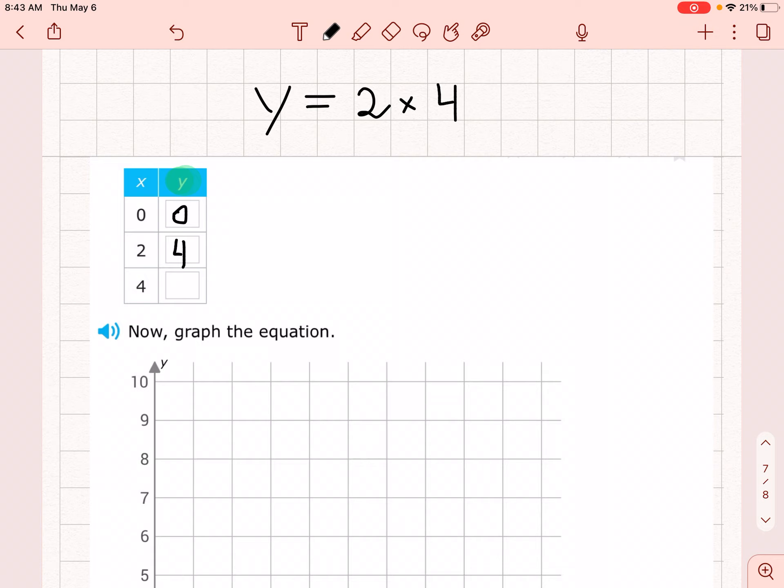Remember, when I have a letter and number next to each other, it means multiply. So it means 2 times 4. So I took the x out and I put a 4 there instead.